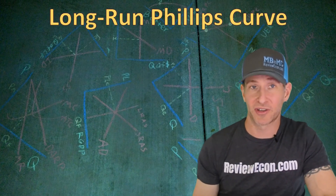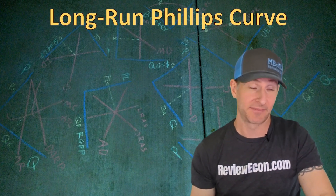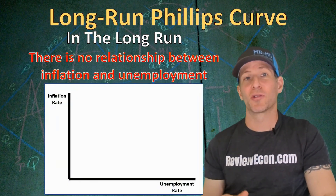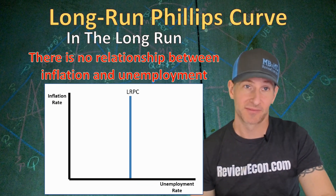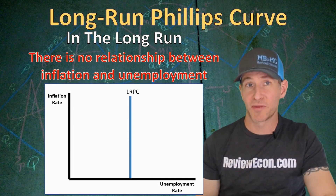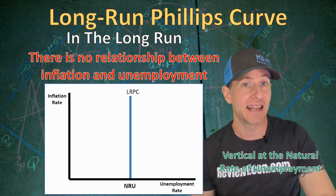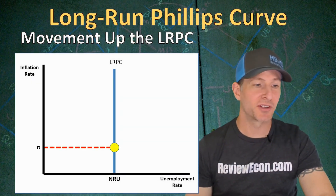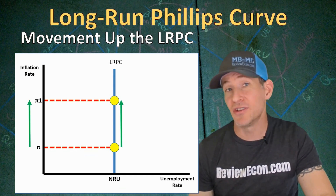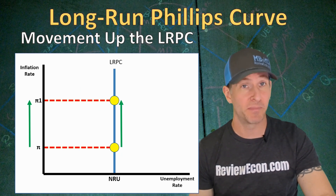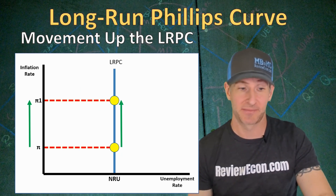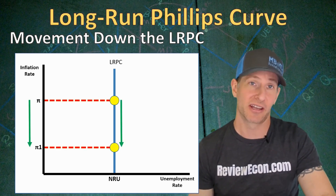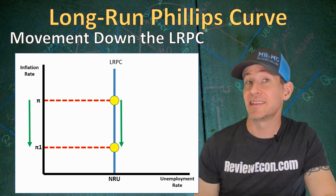Next, we're going to talk about the long-run Phillips Curve and the long-run relationship between the inflation rate and the unemployment rate. In the long run, there is no relationship between the unemployment rate and the inflation rate. As a result, when we graph out the long-run Phillips Curve, we get a vertical curve labeled LRPC. The unemployment rate found below the long-run Phillips Curve is the natural rate of unemployment, labeled NRU. Movement up the long-run Phillips Curve represents an increase in the inflation rate, but we will see no change in the unemployment rate, because in the long run the economy will be at the natural rate of unemployment at any inflation rate. Similarly, movement down that curve is a decrease in the inflation rate, and again we will see no change in the unemployment rate.